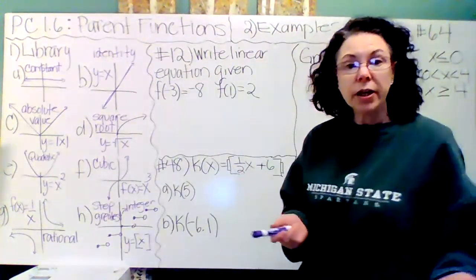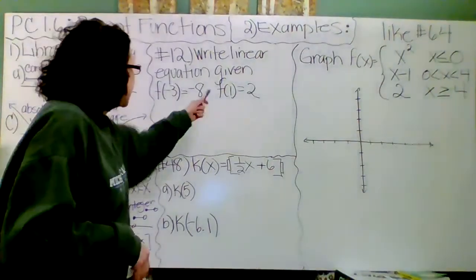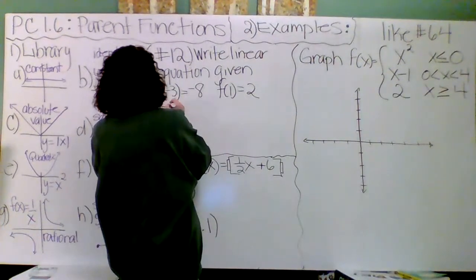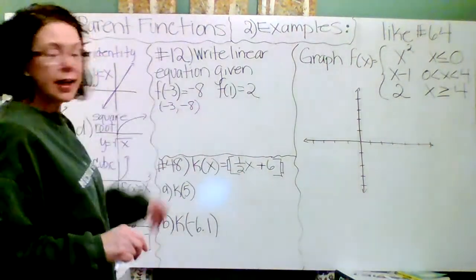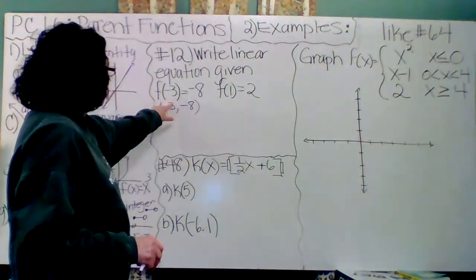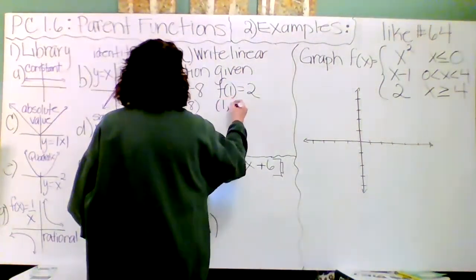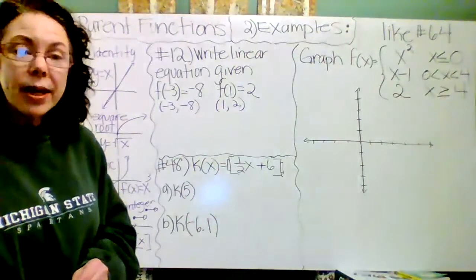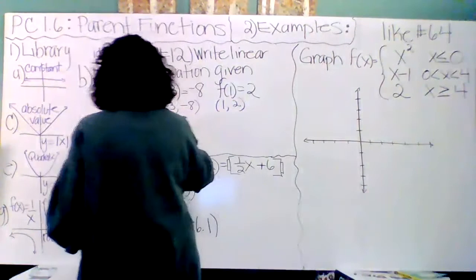We have a fairly short video. Three examples. Number 12, write the linear equation given F of negative 3 equals negative 8 and F of 1 equals 2. What I would want you to know is that this is really just function notation for the point (negative 3, negative 8). When you put in negative 3, X is negative 3, and when you put it into the function you get negative 8 out. When you put a 1 into the function, you get a 2 out. We already did this in section 1.3. We know how to write an equation given two points.